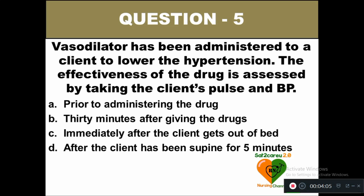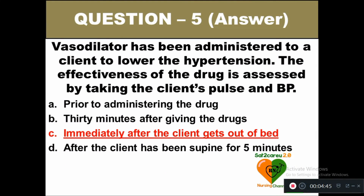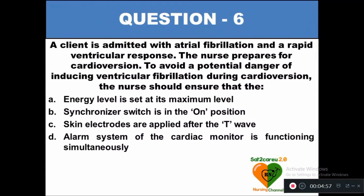Options for question 5: A prior to administering the drug, B 30 minutes after giving the drug, C immediately after the client gets out of bed, D after the client has been supine for 5 minutes. When you administer a vasodilator, to assess effectiveness, the right answer is C — immediately after the client gets out of bed, you check the client's pulse and BP to assess the effectiveness of the vasodilator drug.